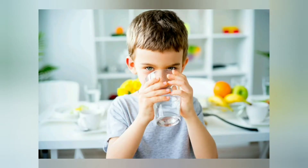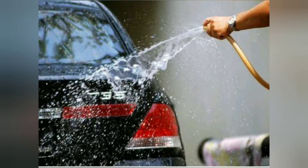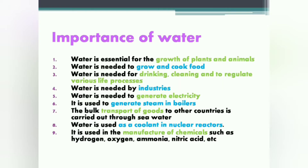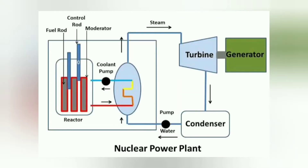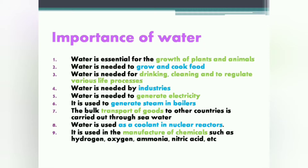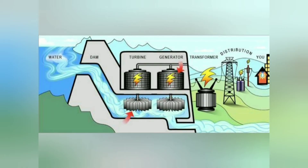Water is also needed by industries for various purposes. It is used to generate steam in boilers and as a coolant in nuclear reactors. Water is used in the manufacture of chemicals such as oxygen, nitric acid, hydrogen, and ammonia. It is also used to generate electricity — for example, thermoelectric and hydroelectric power stations use large amounts of water.